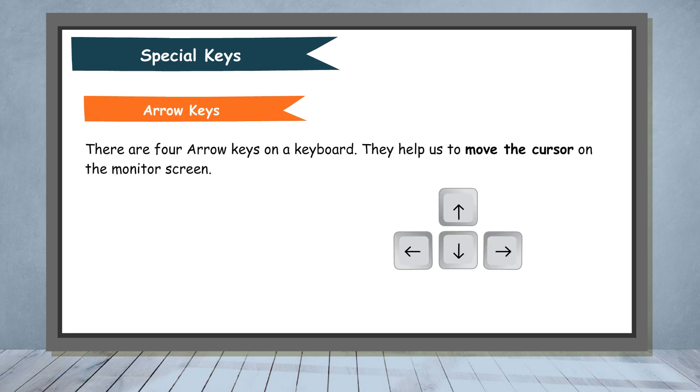Arrow keys. There are four arrow keys on a keyboard. They help us to move the cursor on the monitor. They are also known as cursor control keys.